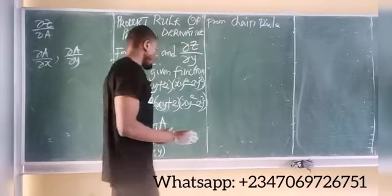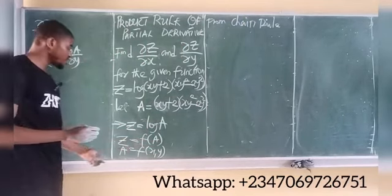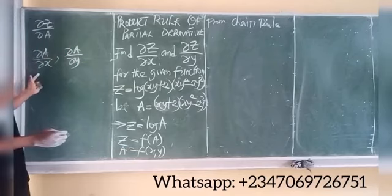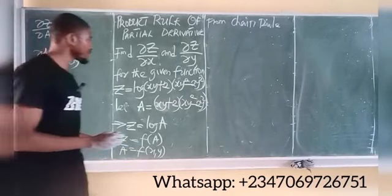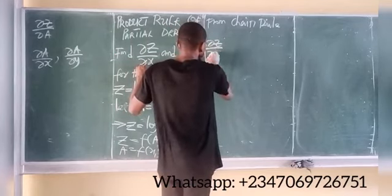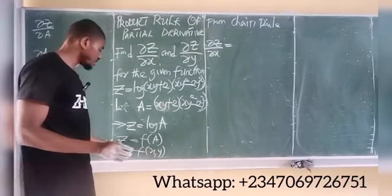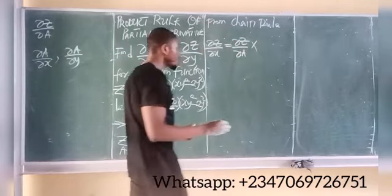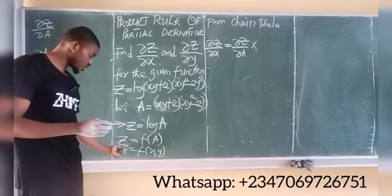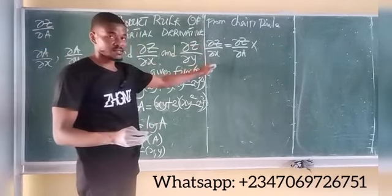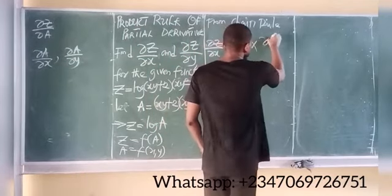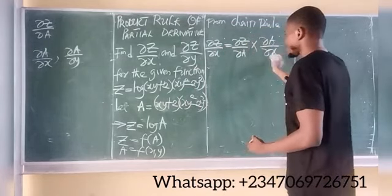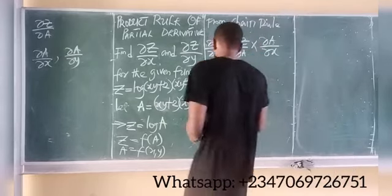From the chain rule of partial derivative: since z is a function of a, I can differentiate z partially with respect to a, and since a is a function of x and y, I can differentiate a with respect to x and y. So to find the partial derivative of z with respect to x, from chain rule: partial z partial a multiplied by partial a partial x. Notice that partial a cancels partial a, leaving partial z partial x, which is what we're looking for.